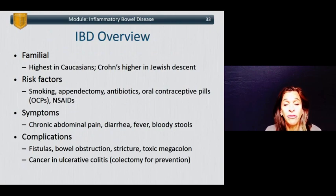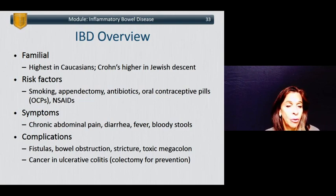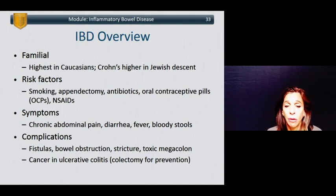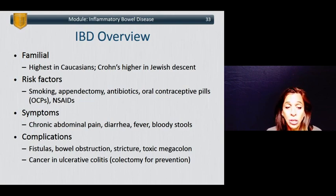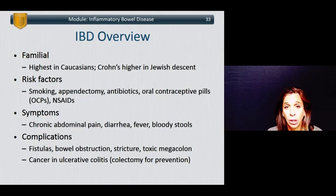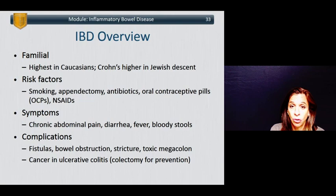IBD can be familial; the highest incidence is in Caucasians, and Crohn's is higher in patients of Jewish descent. Risk factors include smoking, previous appendectomy, taking multiple and recurrent antibiotics, being on oral contraceptive pills, and taking non-steroidal anti-inflammatory drugs. Symptoms include chronic abdominal pain, diarrhea, fever, or bloody stools. Complications include fistulas, bowel obstruction, strictures, and toxic megacolon. Cancer can occur in patients with ulcerative colitis, so patients may undergo colectomies for prevention of colon cancer, treatment of IBD, or treatment of colon cancer.